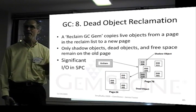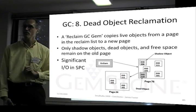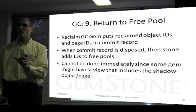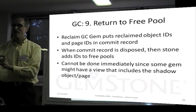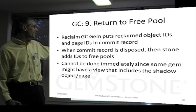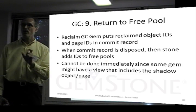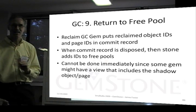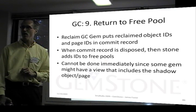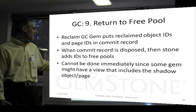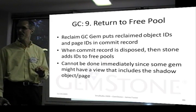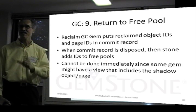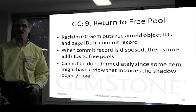There's a lot of IO here because we're copying live objects from shadow pages to new pages. Once that's been done, and once there's no one referencing those shadowed pages — we have to wait until the commit record backlog has been cleared — we can put those object IDs and page IDs in a new commit record and tell the stone: when this is the oldest commit record, then you can clean this up. We create a new commit record, record it in the commit record backlog, listing object IDs and pages that can now be freed. When the stone reaches that commit record, it disposes of it knowing no one references it or anything older, and adds those IDs to the free pools. We can't do it immediately because someone might have a view that includes objects on the shadow page.